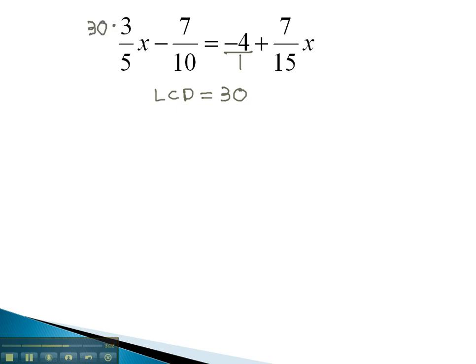So we will multiply each term by 30, all the way across. Again, these 30s will divide out with the denominators. 30 over 5 is 6. 30 over 10 is 3. 30 over 15 is 2.